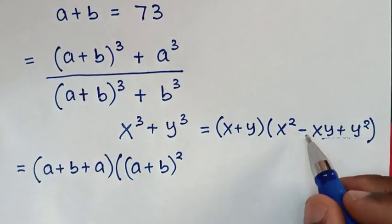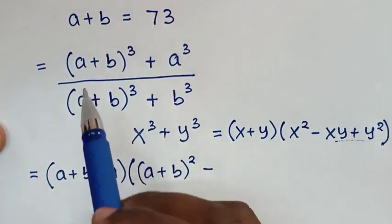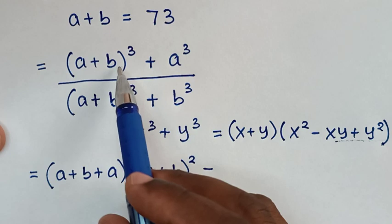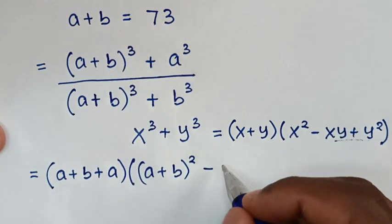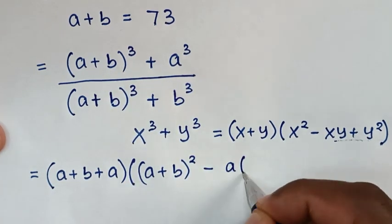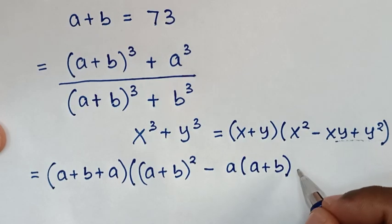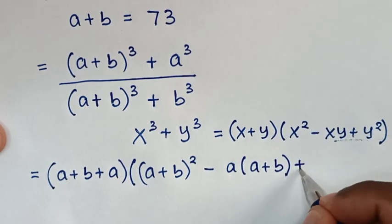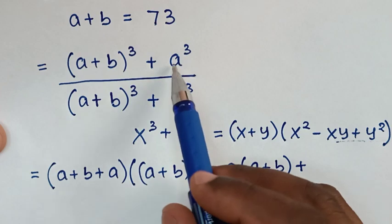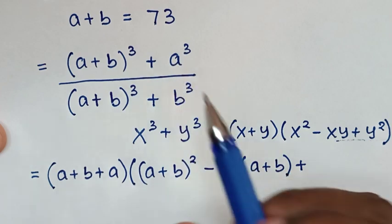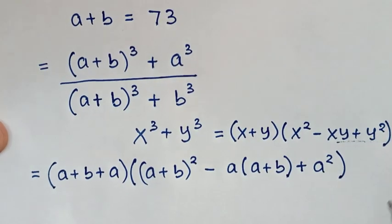So, it will be equal to A plus B plus A bracket, bracket X square — then minus XY, it will be minus X is A plus B, Y is A. So, it will be A bracket A plus B bracket. Then, this plus Y square — Y is this A — so it will be A square, then bracket.